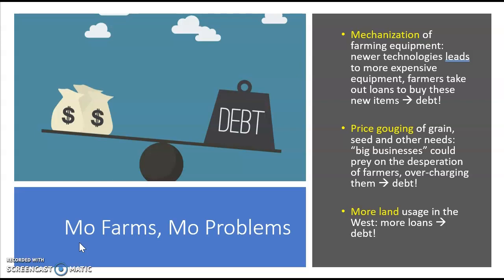Some of the things that start to happen in the mid-1800s: mechanization of farming equipment. We start to see newer technologies, and those new technologies lead to more expensive equipment. Farmers want a mechanical reaper — they go buy it — but they start taking out loans to get many of these items. You take out loans, you end up saddled with debt. Price gouging is another problem causing more debt — price gouging of things like grain, seed, and other business needs. Basically, all the big businesses supplying these farmers overcharge them.